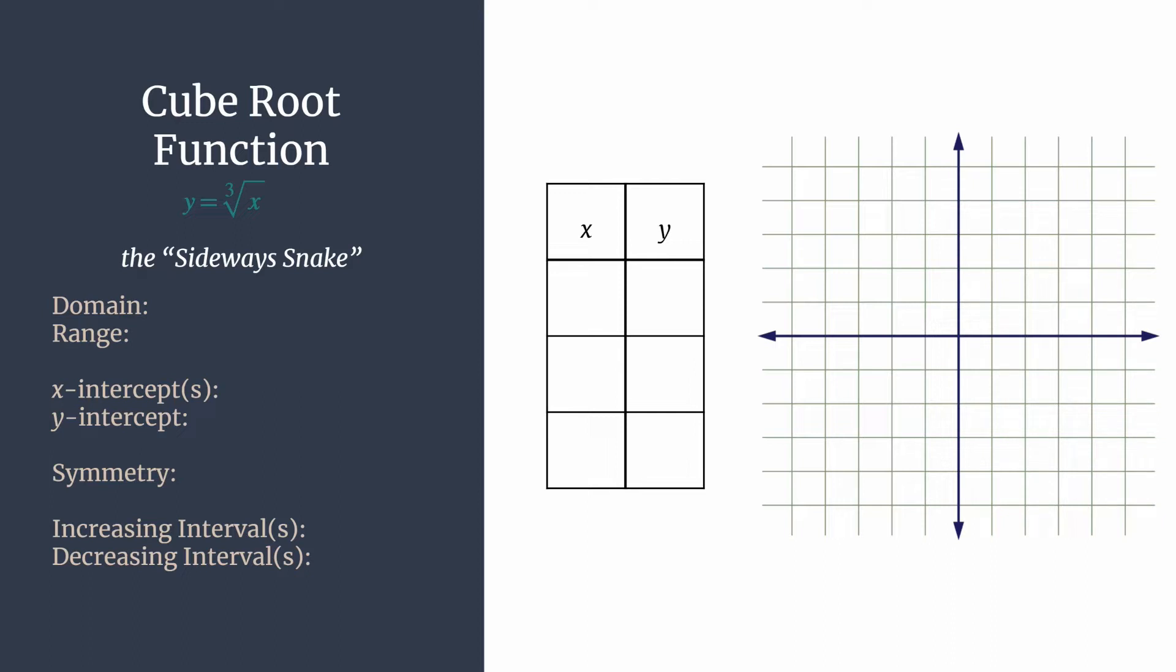Alright, so let's get started by graphing the cube root function. We'll make a table for this first time. And let's see if our typical starting x values negative one, zero and one work well here.